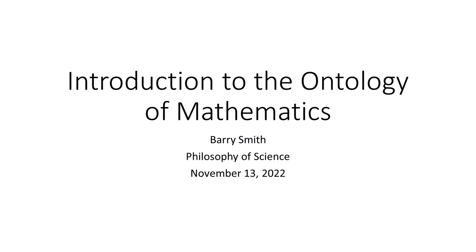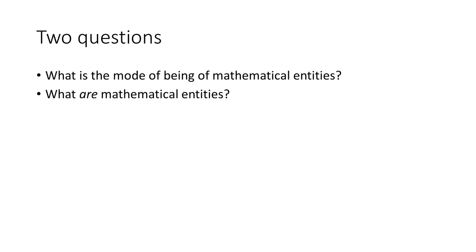The ontology of mathematics has to address two questions: what is the mode of being, and what are mathematical entities? Both questions address things like numbers, geometrical shapes, groups, Hilbert spaces, and equations. We've done a lot of thinking at the general level about how these categories relate to categories in physics and in BFO, but we haven't yet worked out all the details for subtypes such as abelian groups, imaginary numbers, real numbers, and so forth.